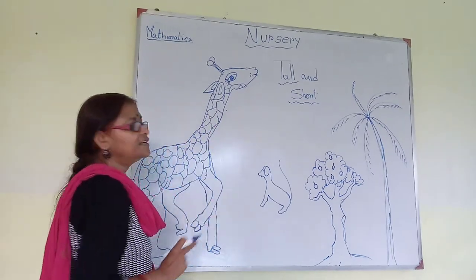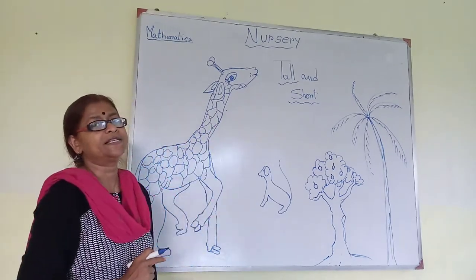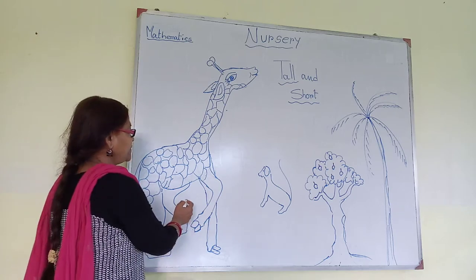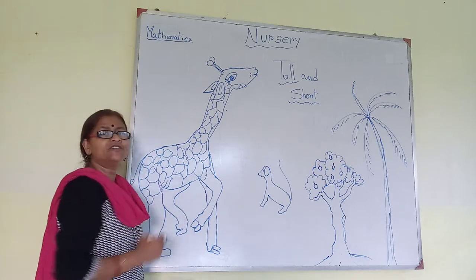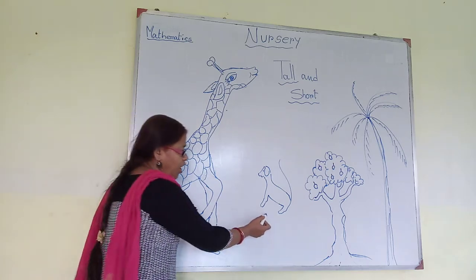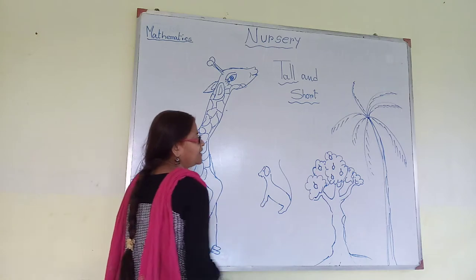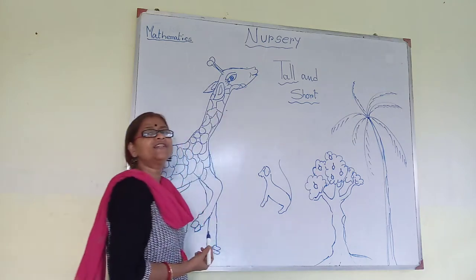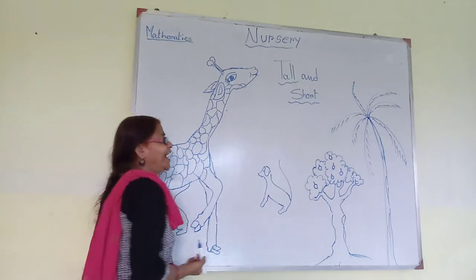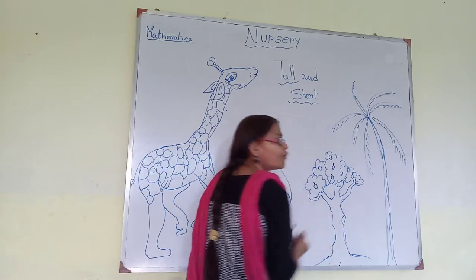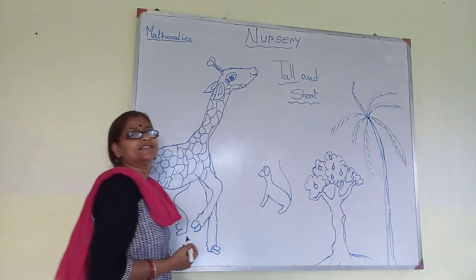I have drawn here some pictures. Here is a picture of a jeera. Here is a dog. Here is a mango tree. And here is a coconut tree.